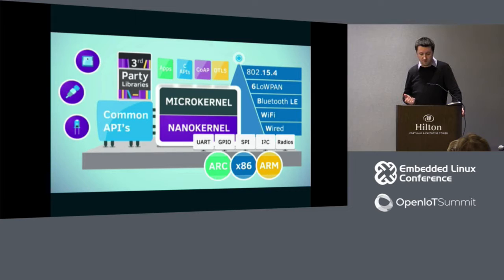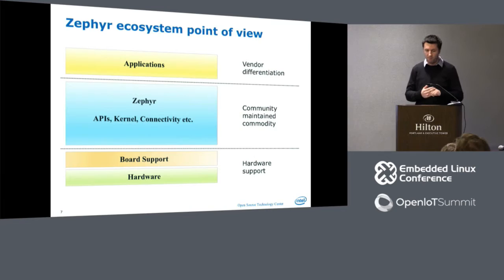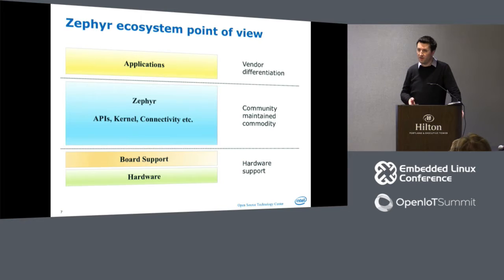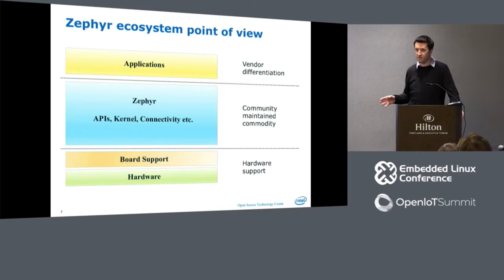From an ecosystem point of view: you pick a piece of hardware, the hardware manufacturer gives you a board support package telling you where your pins and GPIOs are. With Zephyr, that's community-maintained — you pick the board and everything is already there. You get all the connectivity solutions at once. The only thing you really have to do is the vendor differentiation — write the application that does something special and focus on that, not on integrating an RTOS plus a connectivity stack plus an IP stack. It's a commodity, and that goes for Bluetooth, IPv6, 6LoWPAN, Thread, and so on.